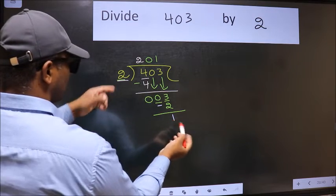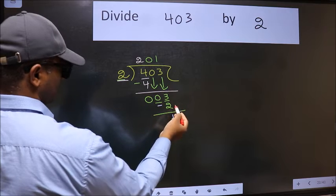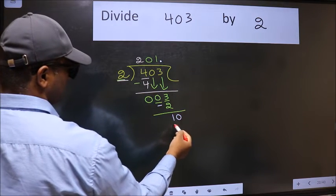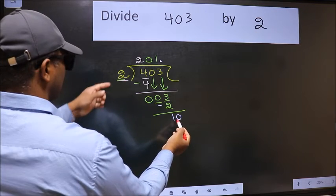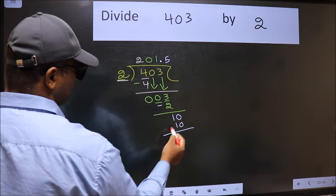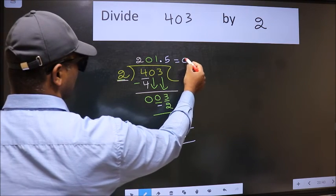1 is smaller than 2 and we don't have any more numbers to bring down. So we should put a dot and take 0. So 10. When do we get 10 in the 2 table? 2 times 5 is 10. Now we should subtract. We get 0. So this is our quotient.